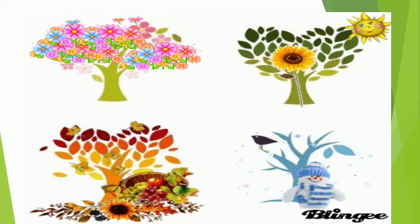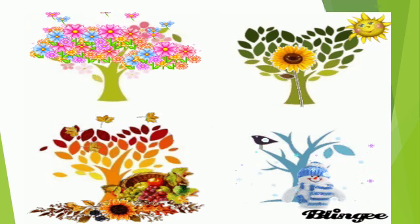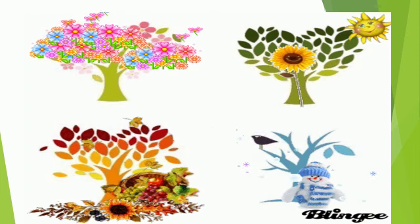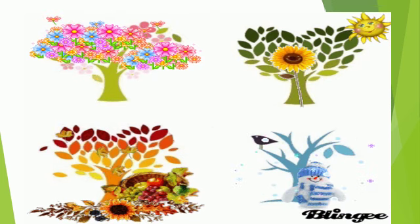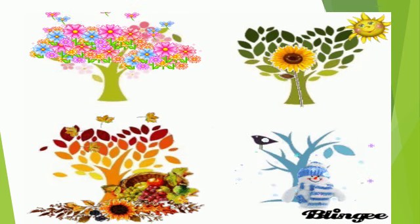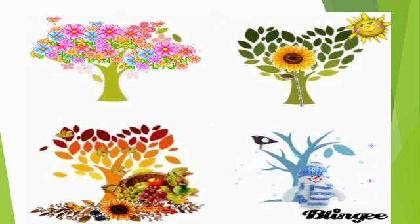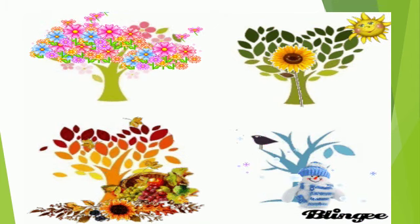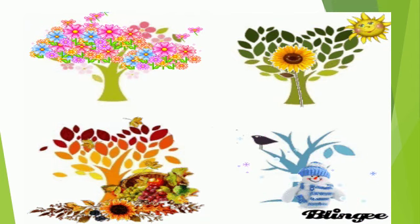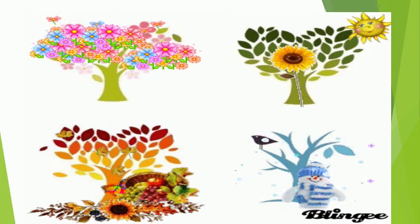These are the four seasons. जो first season आपको नज़र आ रहा है जिसमें प्यारे flowers bloom करें और butterflies हैं - this is called spring season. जो next season आपको नज़र आ रहा है जिसमें green leaves हैं और sunshine है - this is called summer season. नीचे जो trees से orange और yellow color के leaves गिर रहे हैं, इसको हम कहते हैं autumn season. And the last one is winter season जिसमें snow गिरती है और बहुत ज़्यादा ठंड लगती है.